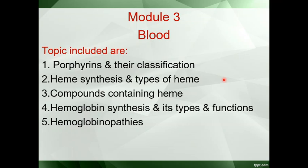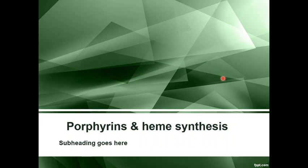Module 3: Blood. The topics included are porphyrin and their classification, heme synthesis and types of heme, compounds containing heme, hemoglobin synthesis, its types and functions, and the hemoglobinopathies. The first segment of the blood module is the porphyrins and the heme synthesis.